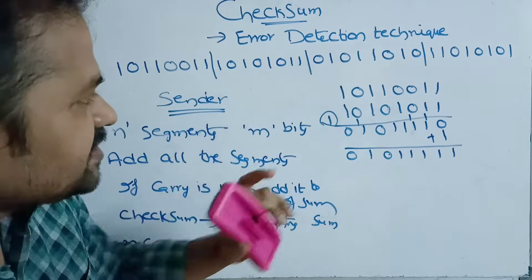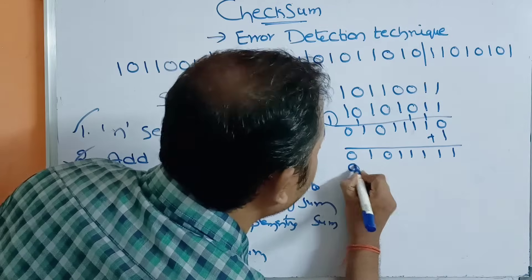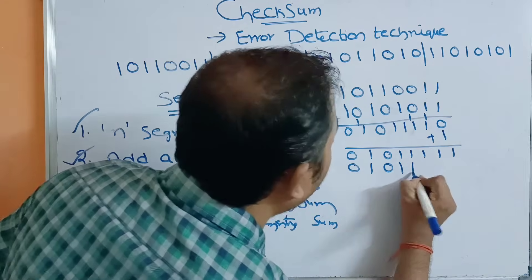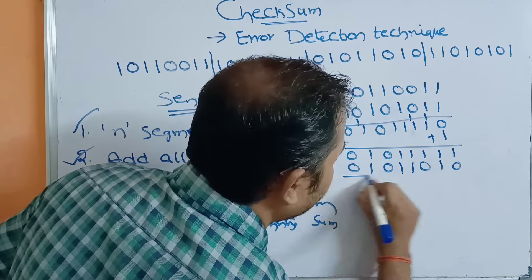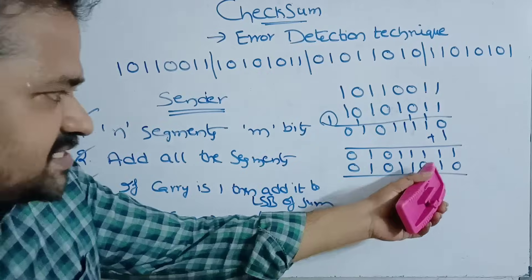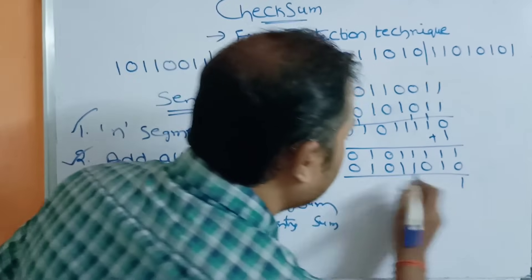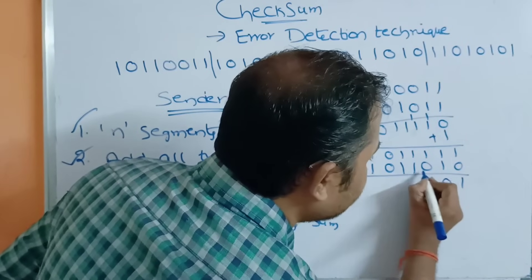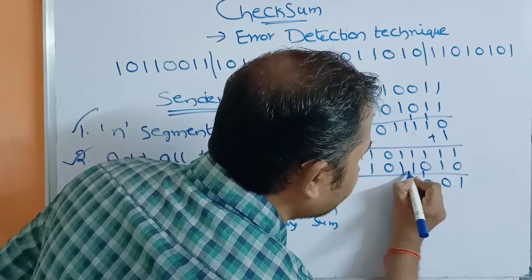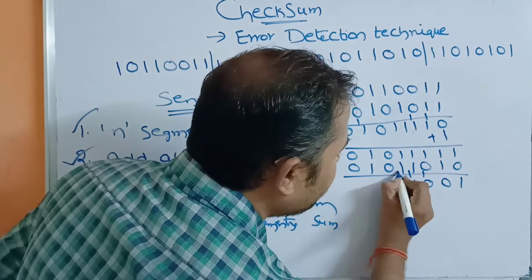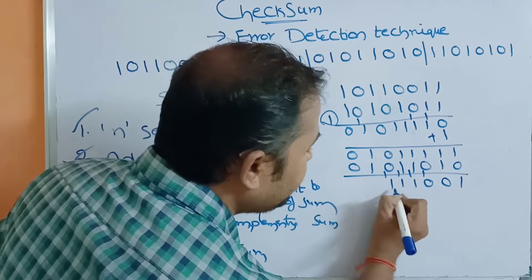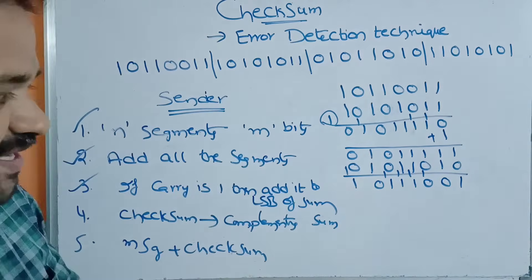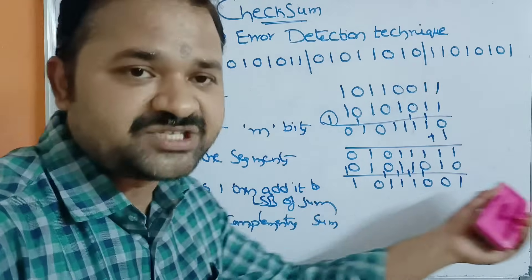Now let us add the third segment to the running sum. The third segment is 01000011. Adding it to the current sum bit by bit, we get a new result. Here we don't have any carry, so there is no need to add it to the sum.